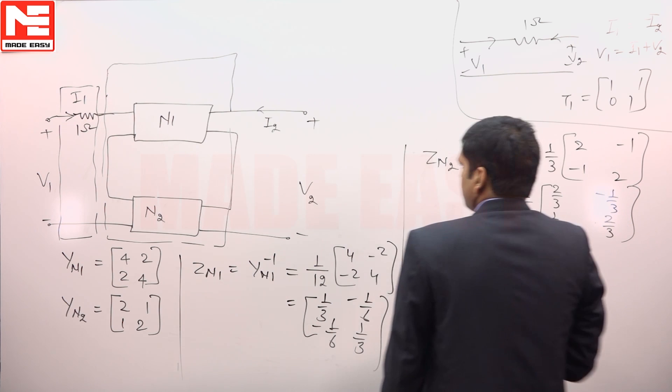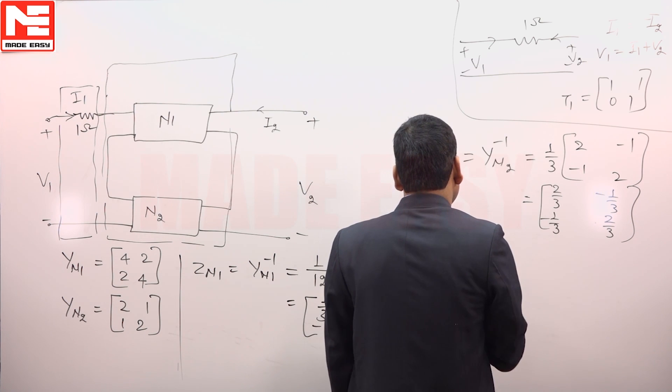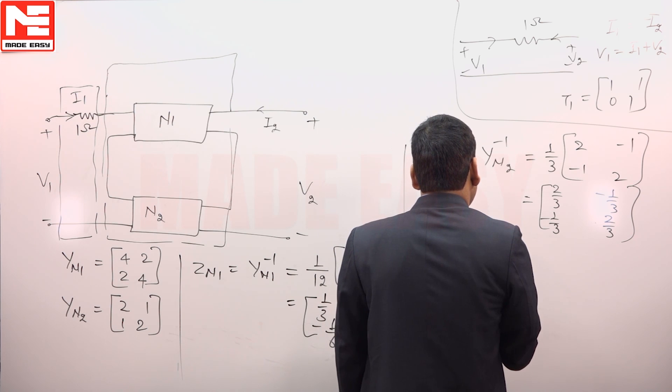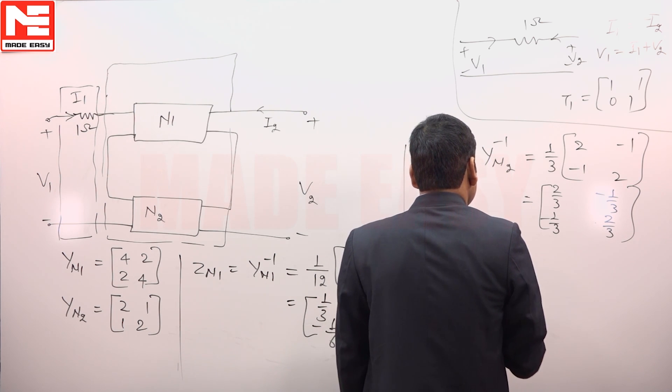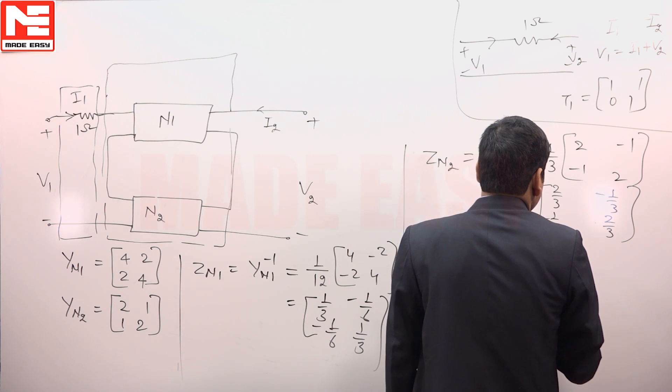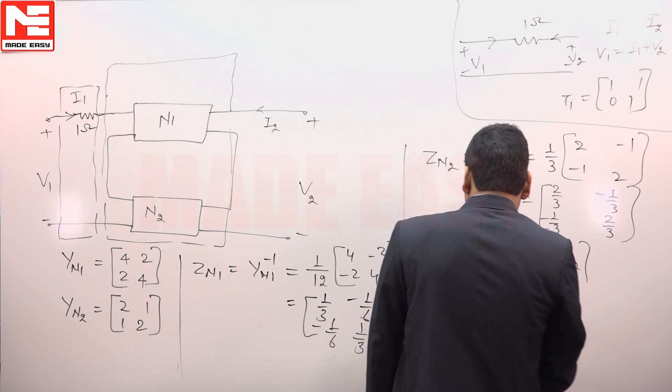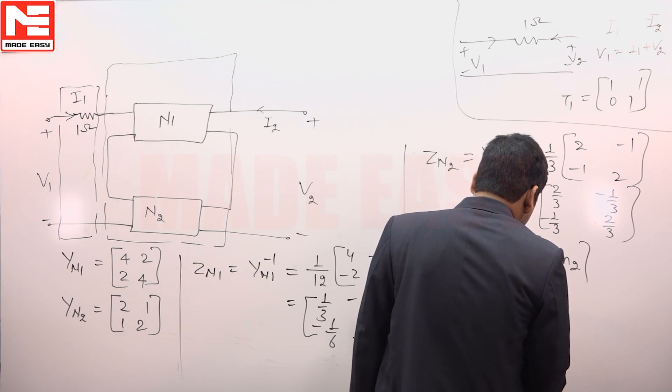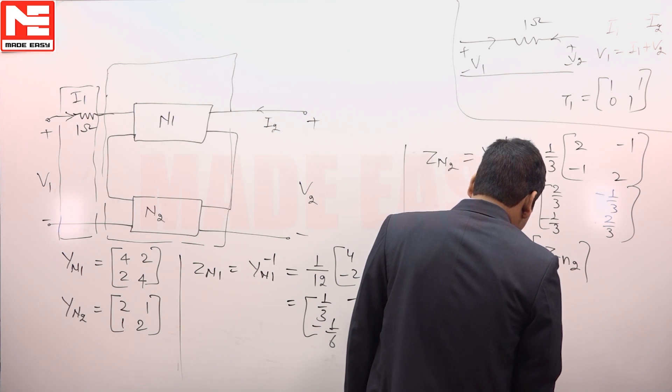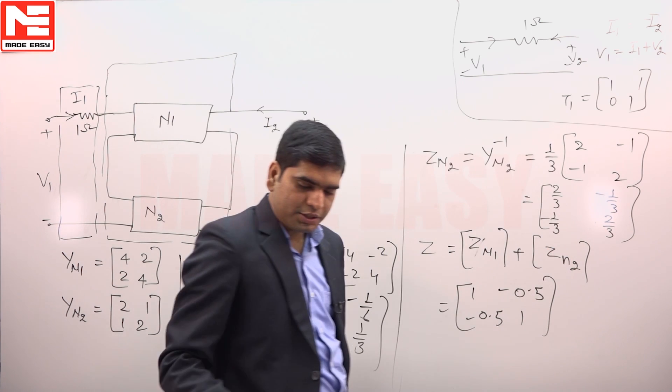Since N1 and N2 are in series, so overall Z is equal to Z N1 plus Z N2. Adding these two will get overall Z and that is equal to 1 minus 0.5 minus 0.5 1. This is the Z parameter.